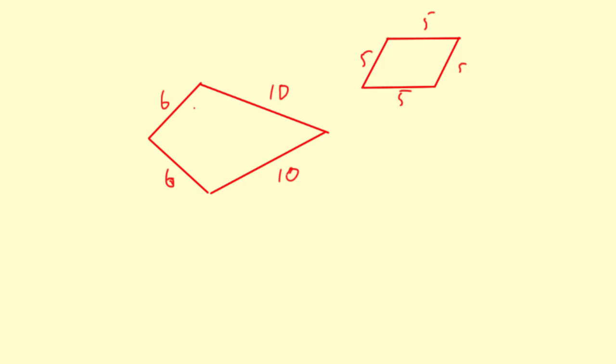So see how it's ten, ten, and then six, six. But you can't have more than two sides the same length, then it's not a kite anymore.